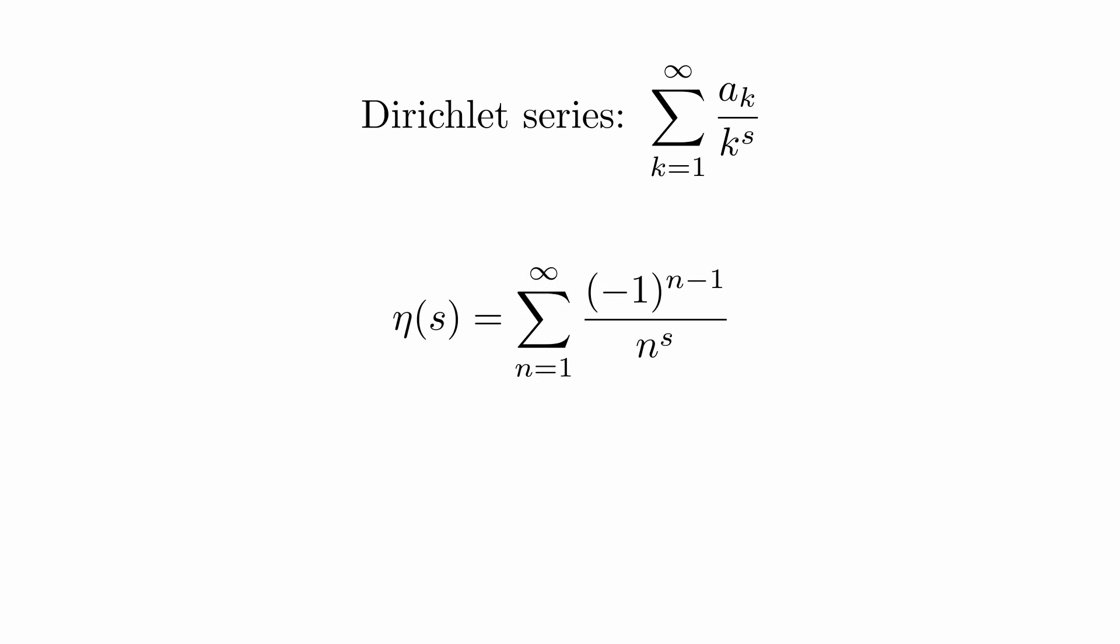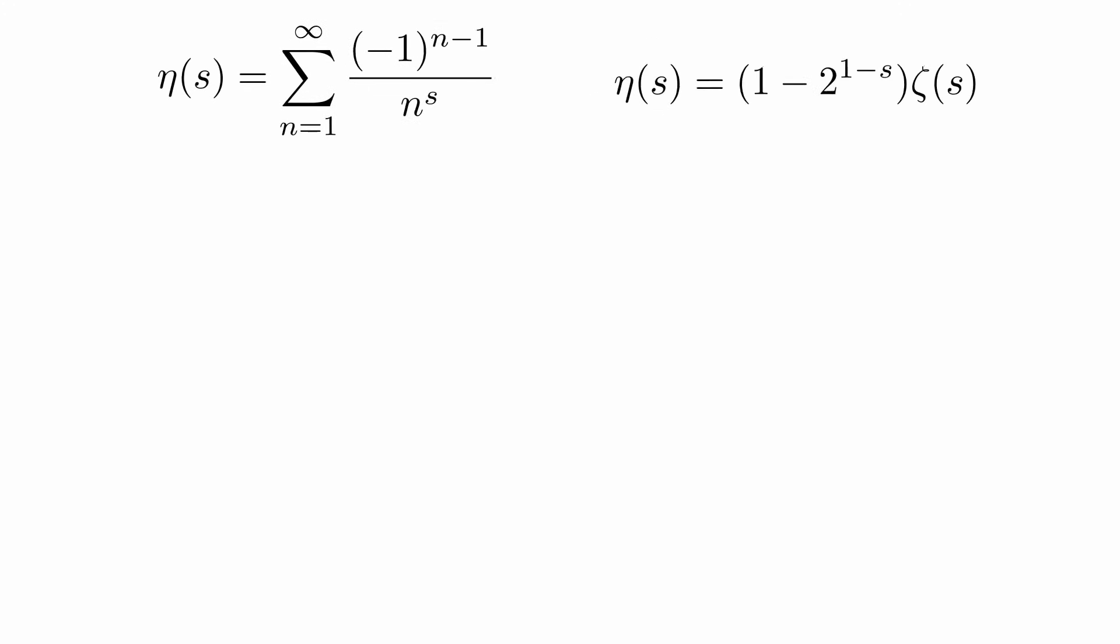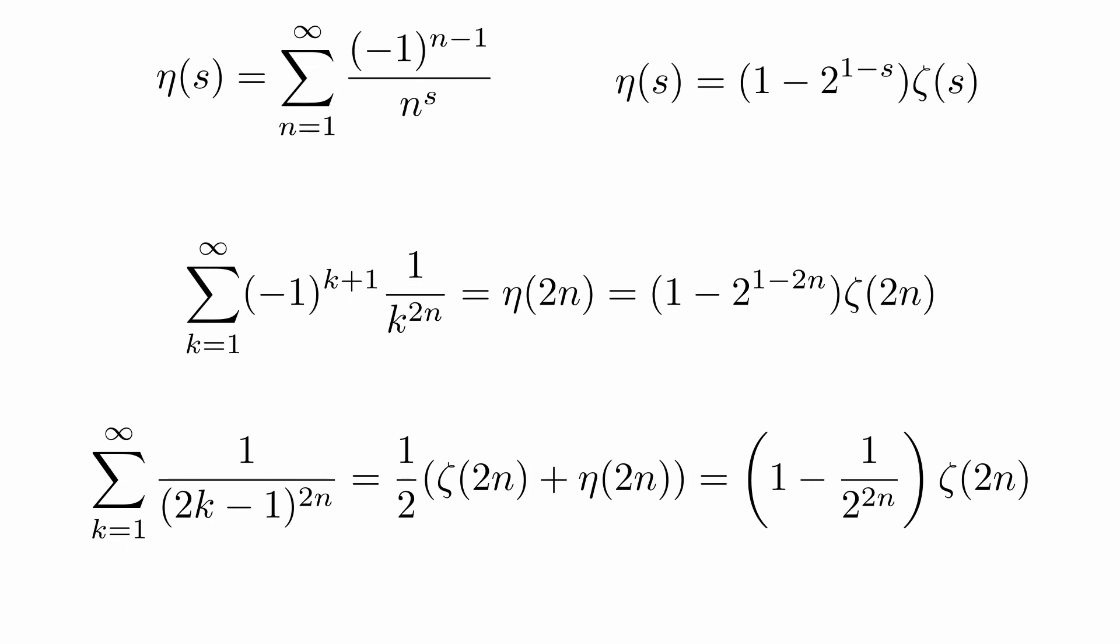This is called the Dirichlet eta function. It's closely related to the Riemann zeta function, as you can start by summing only terms with a positive sign, and then subtract twice all the even terms. You can now factor out the two in the denominators and get this expression involving the Riemann zeta function. This tells us that the Dirichlet eta function is just a simple multiple of the Riemann zeta function. In particular, this allows us to evaluate these two infinite sums.